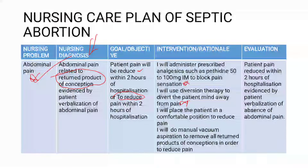The third problem that we can see is activity intolerance. With activity intolerance, this is related to fatigue, evidenced by patient's exhaustion with minimal activities. Our goal or objective, we can say patient will have improved activity tolerance within two days of hospitalization. In terms of interventions, the first one, you can put the patient on total bed rest to reduce oxygen demand, thereby conserving energy.